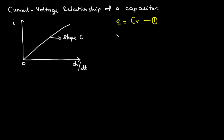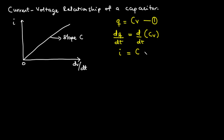We compute dQ/dt, which equals d/dt of C times V. The time rate of change of charge is equal to current, so dQ/dt equals i, the instantaneous current. Since C is a constant, we pull it out, giving us i = C(dV/dt). This is the instantaneous current, and we call this our second equation — the current-voltage relationship of a capacitor.